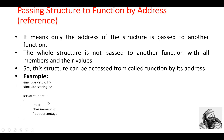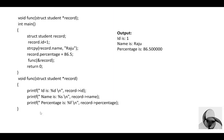For example, we have a structure 'student' having three data members: ID, name, and percentage. Then declare a function — 'void' is the return type, 'funz' is the name of the function, 'struct' is the keyword, and 'student' is the name of the structure, passing a pointer to a structure. To declare a pointer, use the star operator. Then inside the main function, declare the structure variable — 'record' is a structure variable of student structure type.